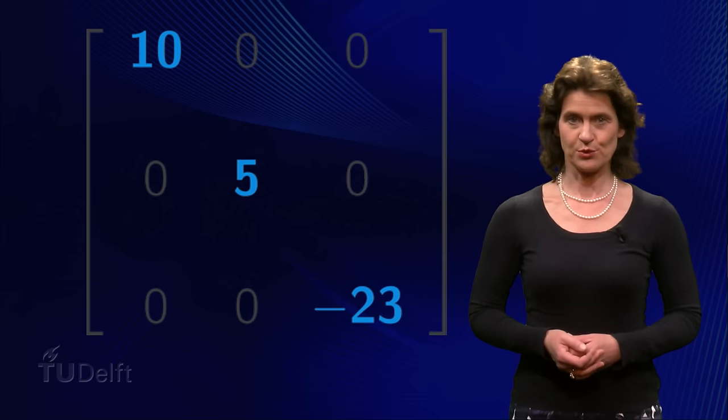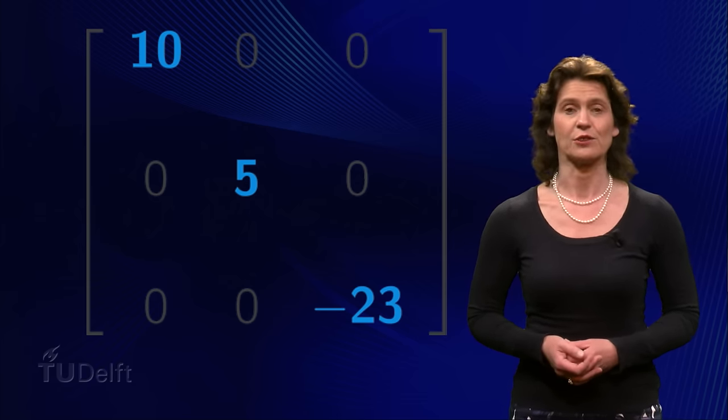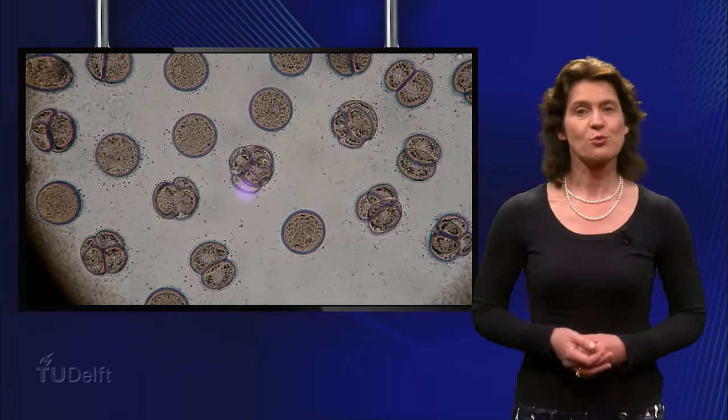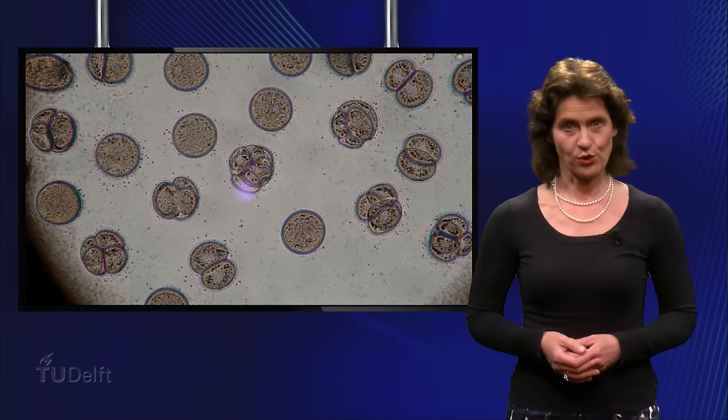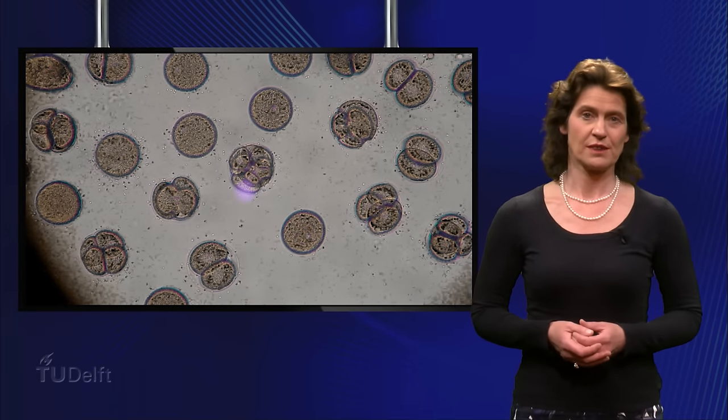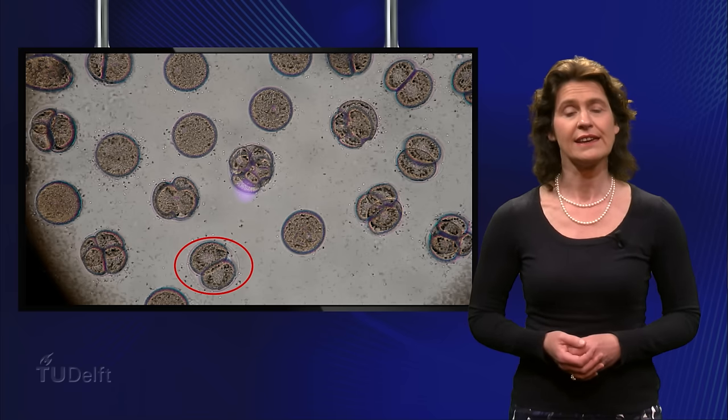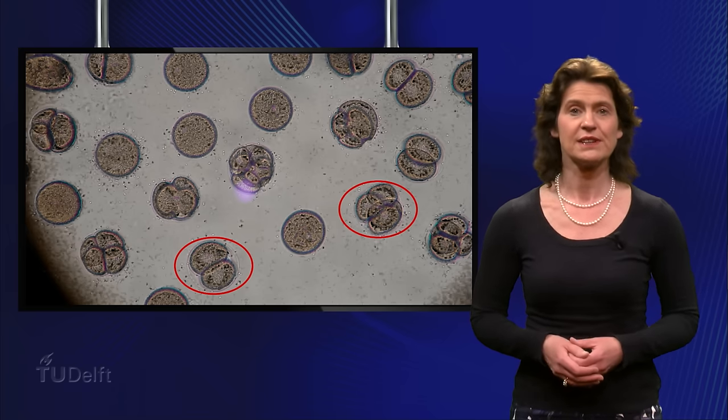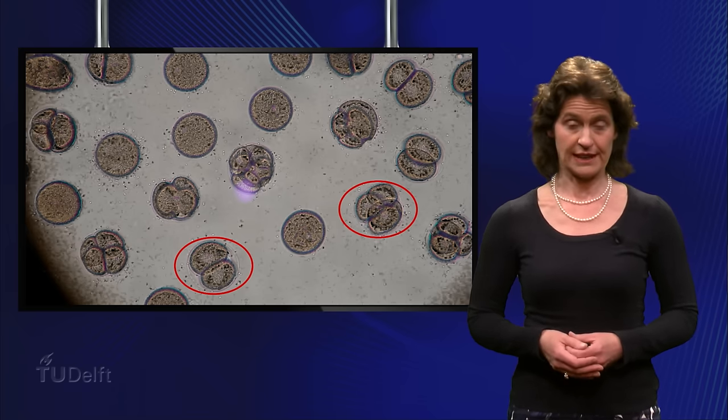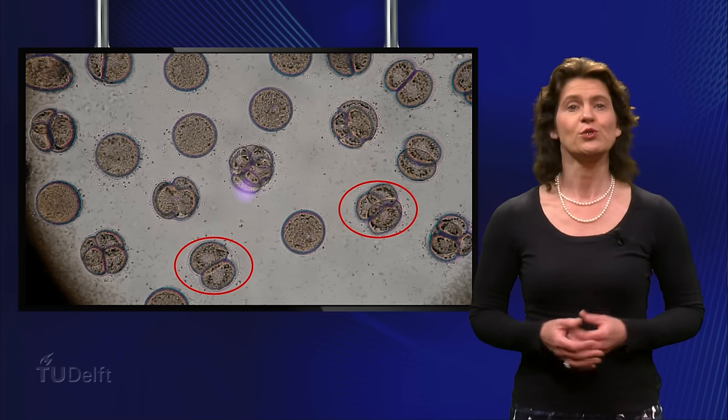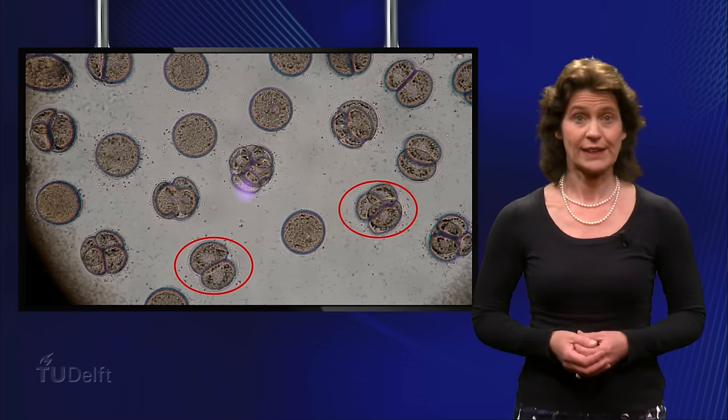Let's first see in which situations you might encounter a diagonal matrix. Suppose you are studying the rate of growth of two types of cells. Suppose you know that the first cell type splits into two new cells every day and the other type splits into three new cells every day. You want to compute the total number of cells after 20 days.